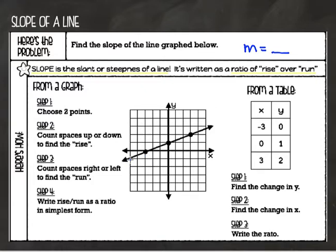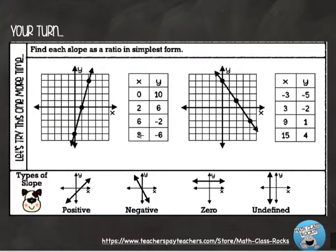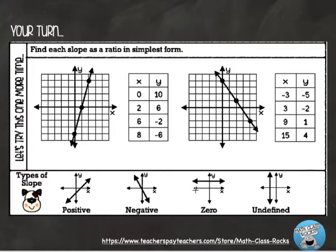Another thing I notice is this line has a positive slope. At the bottom of your page are the different types of slope. You always look at your graph starting from the left side heading to the right, just like when you're reading a book. If the line goes up from left to right, it's positive — picture yourself climbing up a hill. A negative slope goes down from left to right. A zero slope goes perfectly straight across — not up or down. And a vertical line has an undefined slope.